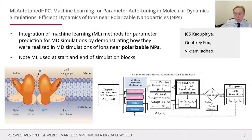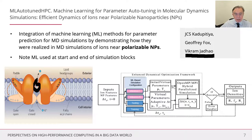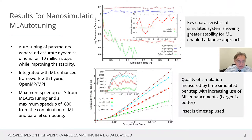Here is an example from a collaboration with junior faculty in nanoengineering at Indiana University. We're running simulations to look at ions near polarizable nanoparticles — here are ions and here are nanoparticles, polarized. You run the simulation in blocks and use machine learning to optimize at the end of each block. Here are some results of some of the runs, showing that using this dynamic machine learning to optimize the system is producing good results.